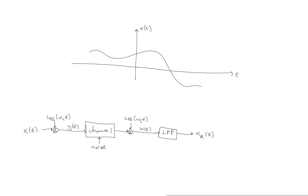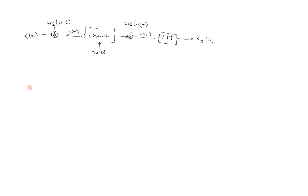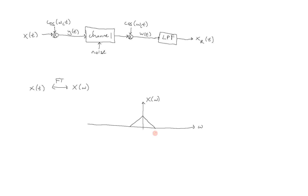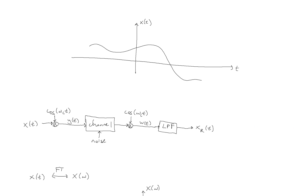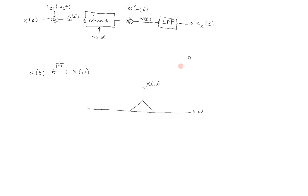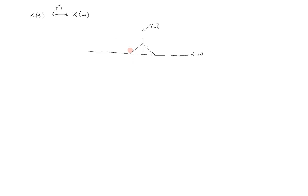So why does this help us to communicate effectively over the wireless channel? It has to do with the frequency content of x(t). If we use the Fourier transform, we can find the frequency content — we'll call it X(omega) — of x(t). The way this may look, just for illustrative purposes, is that X(omega) is going to be a triangle in frequency. We have to have symmetry about the y-axis, so it might look something like this. This signal itself would not propagate very well because it's at very low frequencies.